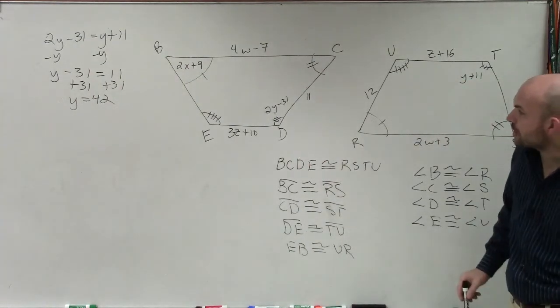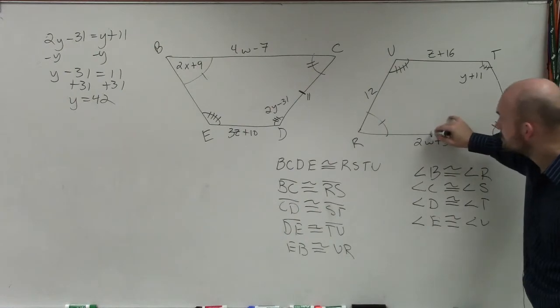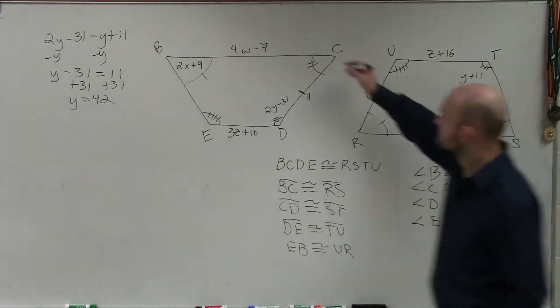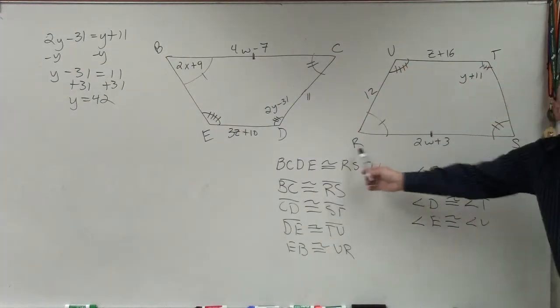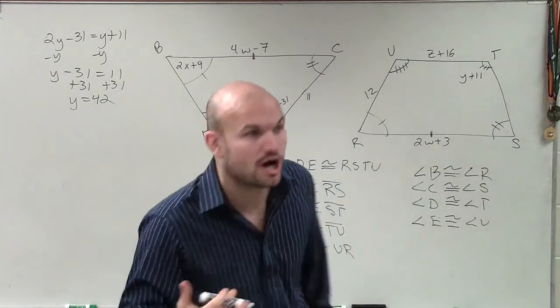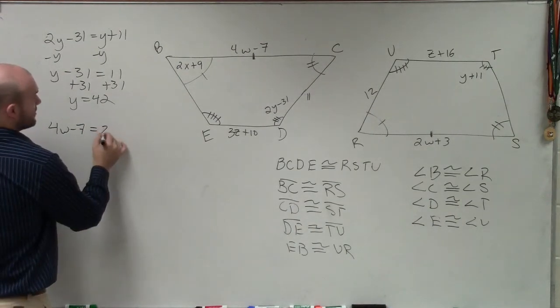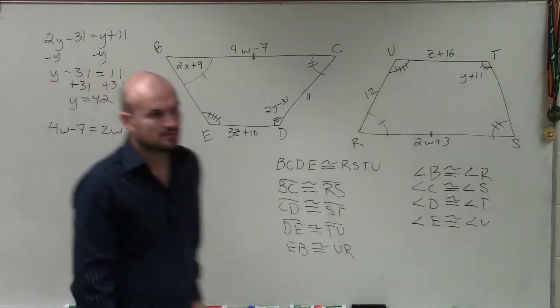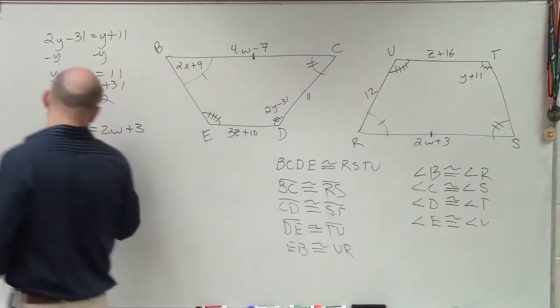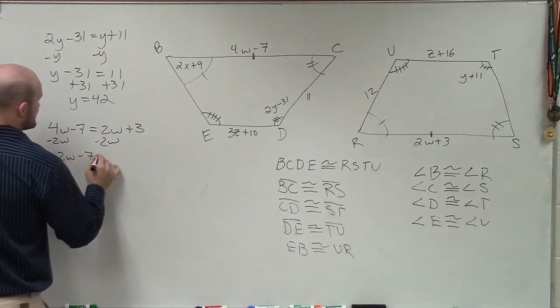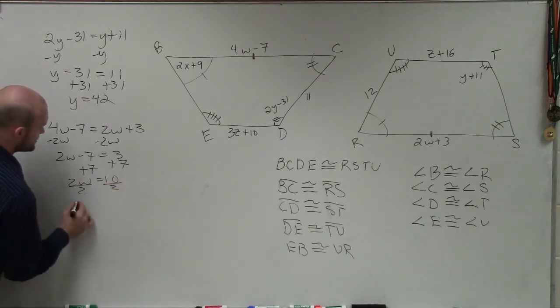Now let's go to the side lengths because that was everything we needed for the angles. It says that BC is congruent to RS. So B to C, which is right there, is congruent to R to S, which is right here. I'm sorry. B to C is right here. So B to C is congruent to R to S. If they're congruent, that means the measure of their sides are equal. So therefore, now I can say 4W minus 7 is equal to 2W plus 3. Because those side lengths are congruent. So their measurement is exactly the same. Now I just solve for W. Subtract 2W, subtract 2W. 2W minus 7 equals 3, add 7, add 7. 2W equals 10, divide by 2, divide by 2, W equals 5.